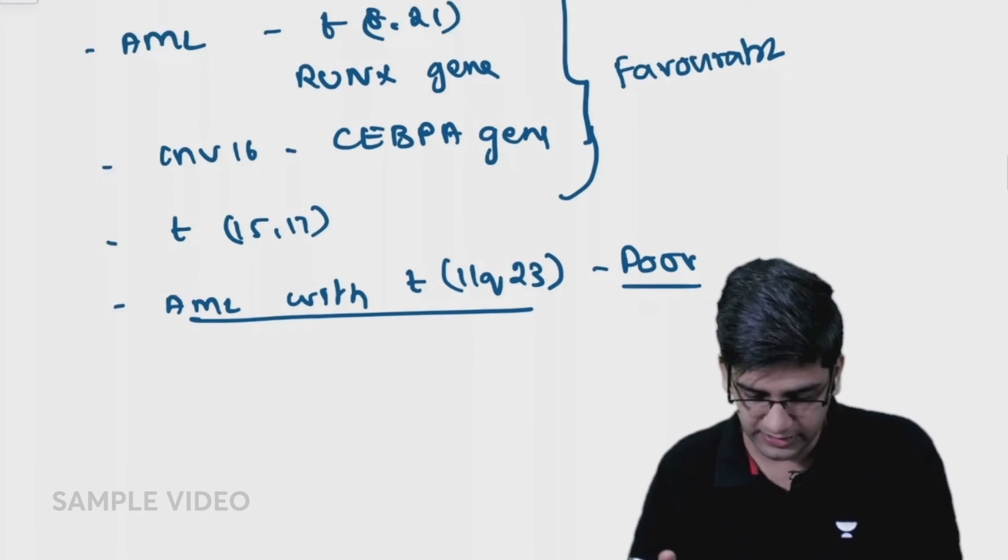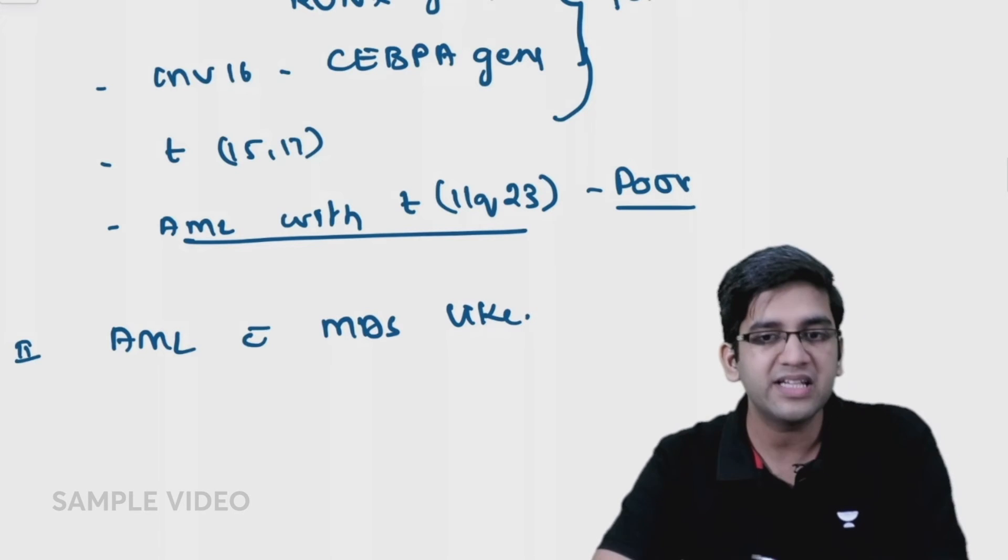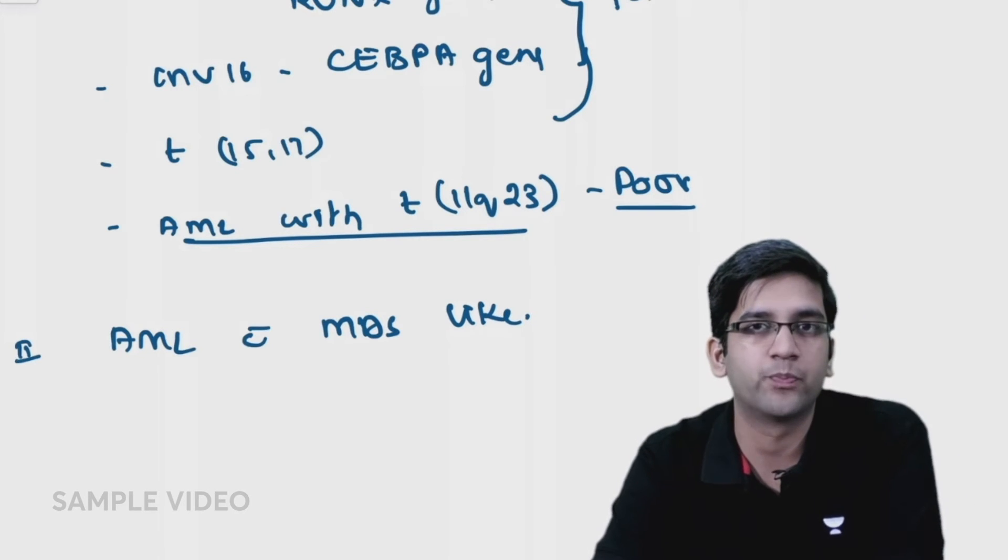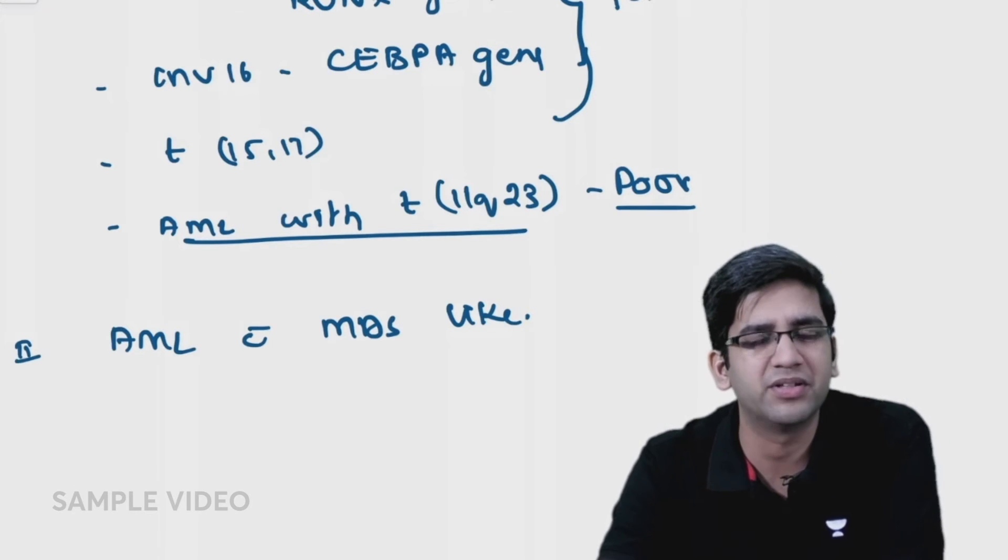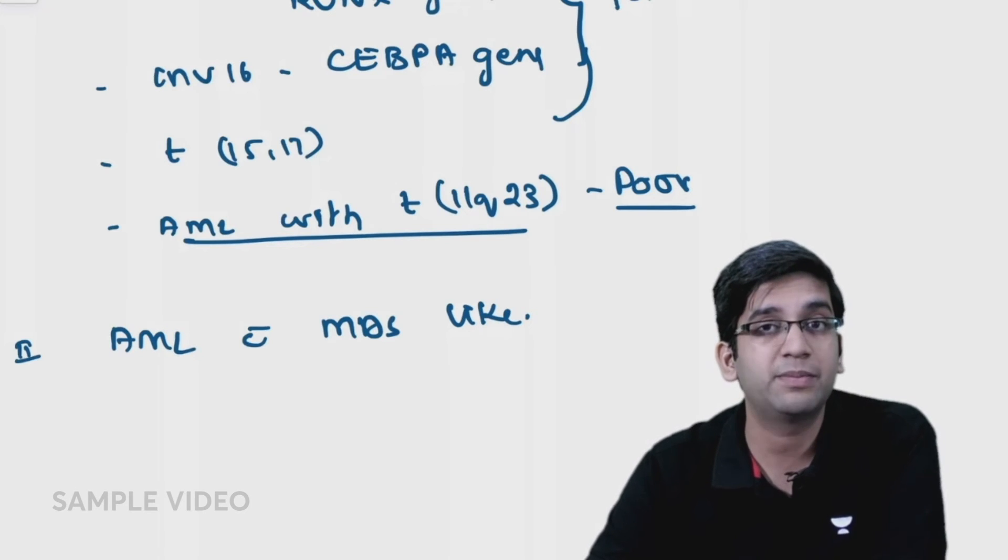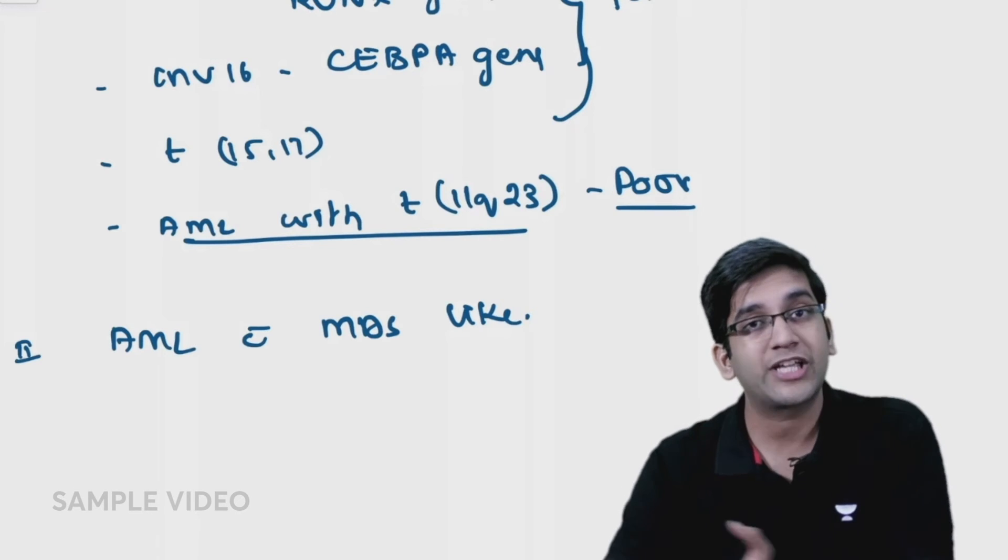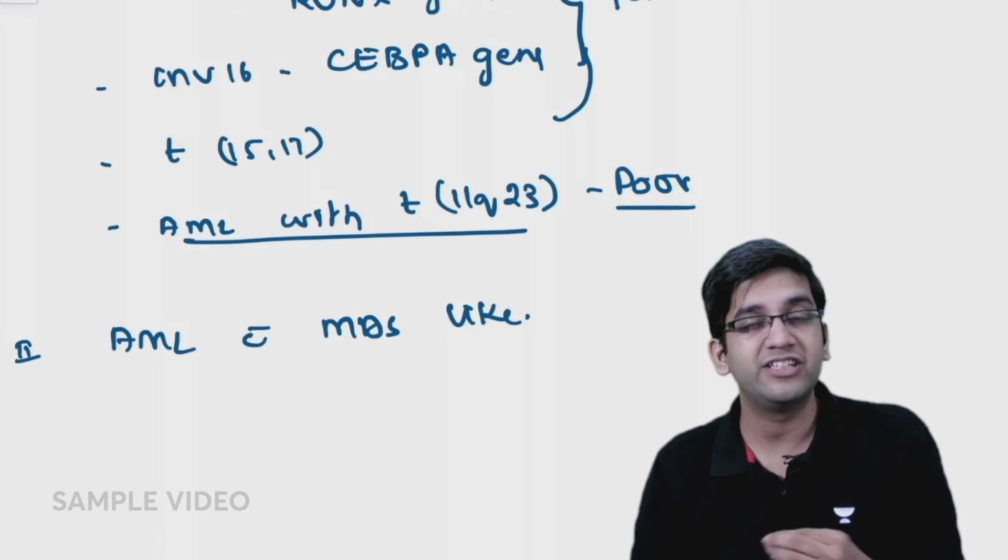The second thing is AML with MDS-like features. MDS stands for myelodysplastic syndrome. When I say myelodysplasia, I'm having some problem in the myeloid lineage, not to the extent it's going to produce 20% blasts - maybe less than that, 5%, 3%, 10%.